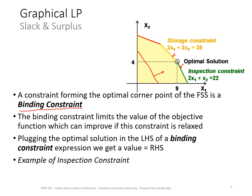How can you recognize which constraint is binding and which is not, if you're not looking at it graphically? The characteristic of a binding constraint is that when you plug your optimal solution values into the left-hand side, the value of the left-hand side will be equal to the value of the right-hand side. Let's do the example of the inspection constraint: 2x1 + x2 ≤ 22. Plugging in the optimal solution (9, 4): 2×9 = 18, plus 4, equals 22 — which is exactly equal to the right-hand side.